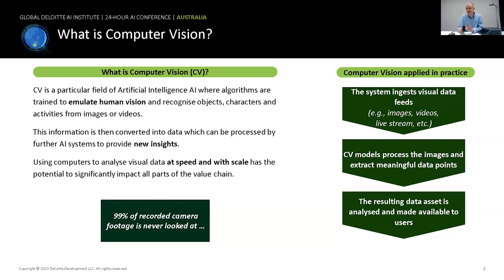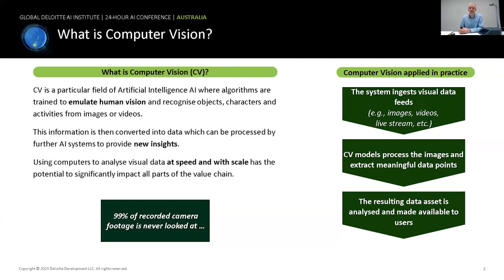The way it works is fairly simple. We start by taking the images, the video, the live stream, whatever it is, and feed it into some models. Those can be models that have been off the shelf — someone else has trained them to look for particular things — or they can be ones customized for your particular business application. Lastly, that goes into some data and is saved for other analytic purposes.